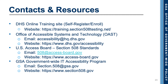Contacts and resources: The DHS online training site for self-enrollment and self-registration is at training.section508testing.net. To contact the Office of Accessible Systems and Technology, or OST, their email is accessibility@hq.dhs.gov and they can be found at dhs.gov/accessibility. To contact the United States Access Board on Section 508 standards, their email is 508@access-board.gov or through access-board.gov. To contact the GSA Government-Wide IT Accessibility Program, we can be reached at section.508@gsa.gov or through section508.gov.